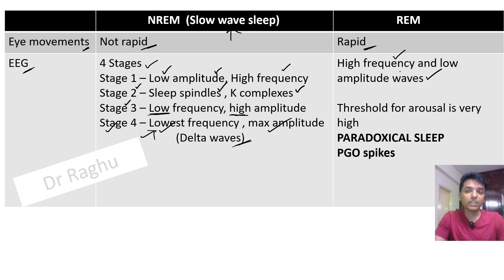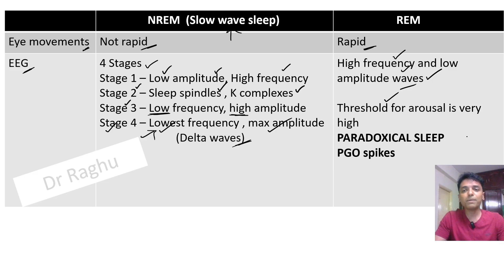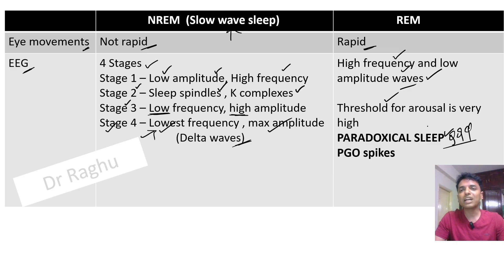Even though the waves are high frequency and low amplitude, the threshold for arousal in REM sleep is very high, meaning a person cannot be aroused easily, which is why this sleep is also called paradoxical sleep. So if an exam asks about paradoxical sleep, write about REM sleep, and if they ask about slow wave sleep, write about NREM sleep.